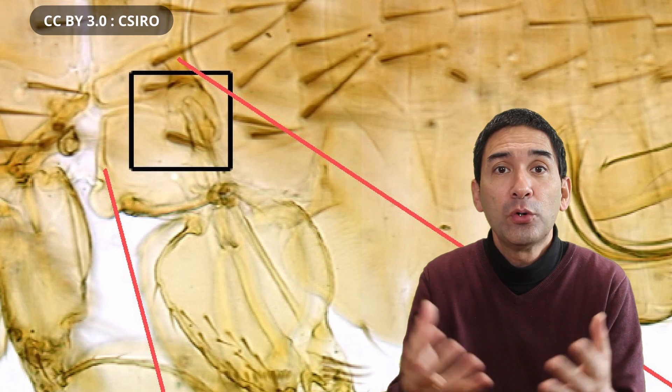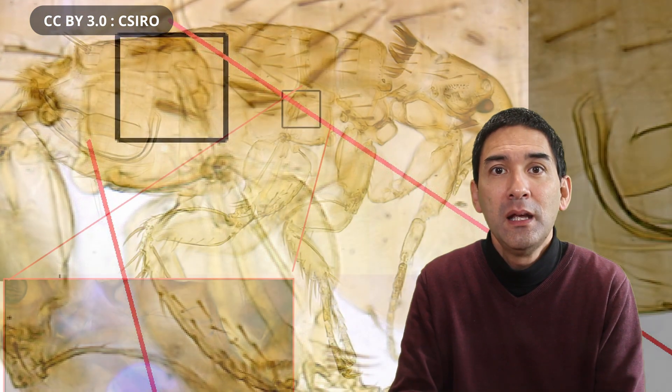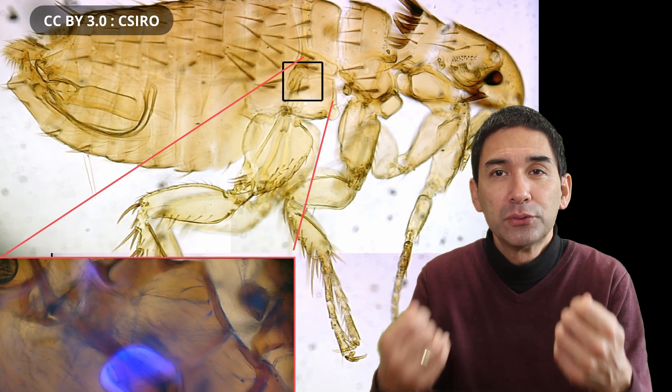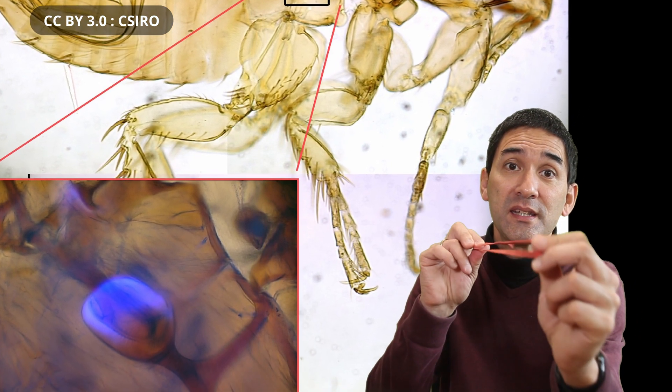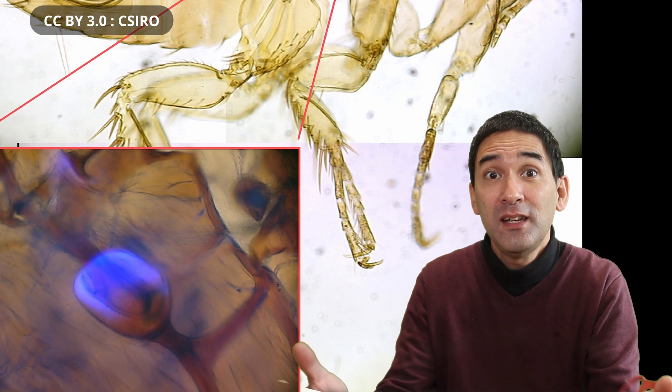This organ contains a protein called Resilin, hence the name, and it's a very elastic protein that works like a rubber band. So the muscles stretch the organ and when it snaps back then the flea jumps off.